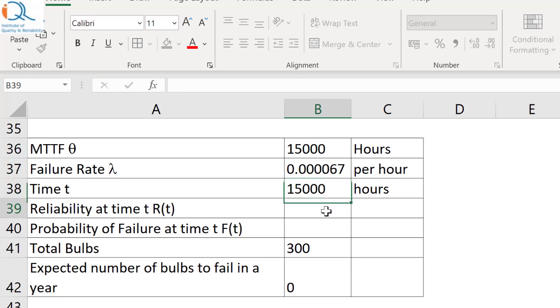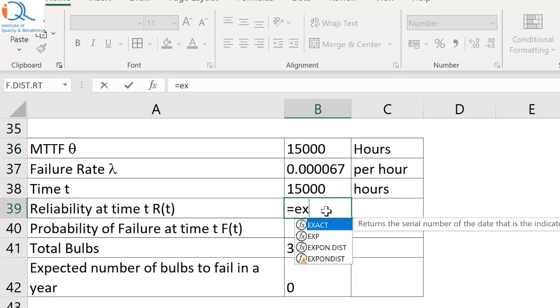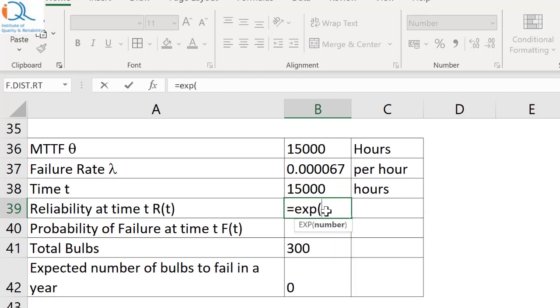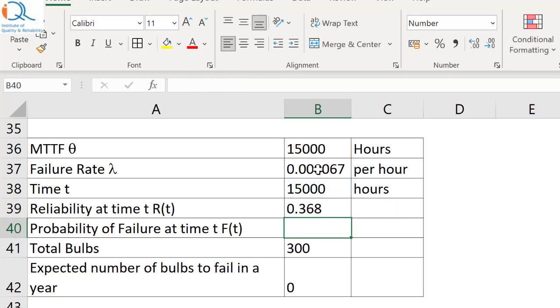Time t I put equal to 15,000. Now, reliability at time t will be equal to exponential of minus time t divided by theta which will be of course 1. Because it is theta by theta, 0.368. The reliability at time t equal to MTTF equals 0.368.